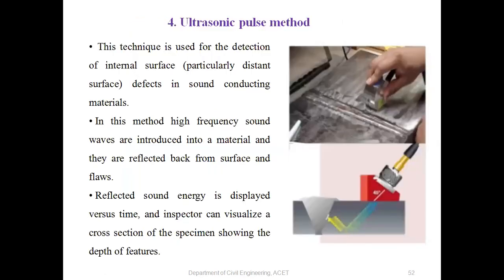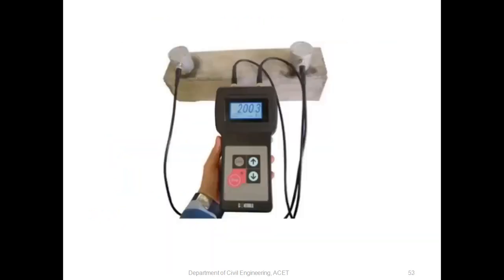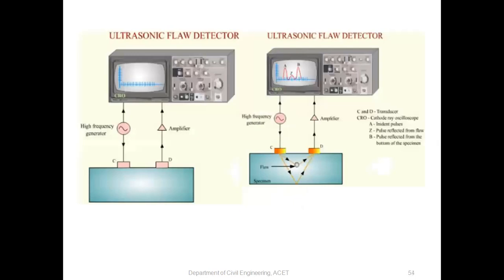The ultrasonic pulse velocity method: when you apply the ultrasonic pulse instrument on the surface of a slab or beam — placing the two electrodes on the surfaces — the instrument gives the frequency and measurement on the screen, from which the strength of the required concrete is determined. After knowing all the values, you can calculate the total strength of the current structure.